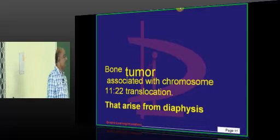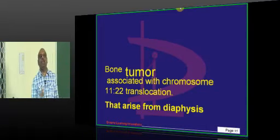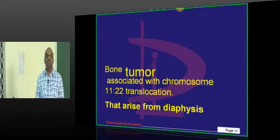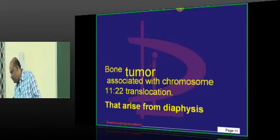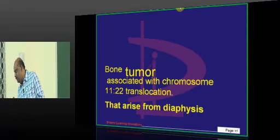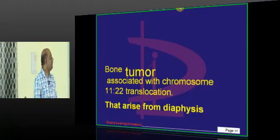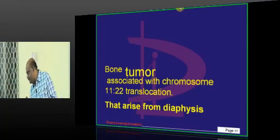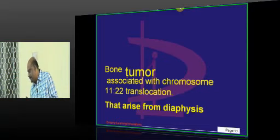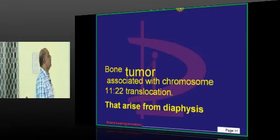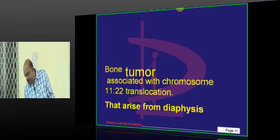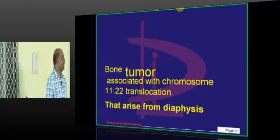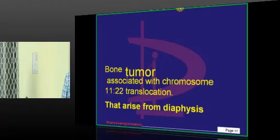Bone tumor with chromosome 11:22 translocation which arises from the diaphysis. Let me ask you, which is that bone tumor which comes to your mind classically, which is associated with 11:22 translocation? Which is located in the diaphysis? You need to give me one answer.